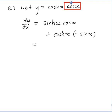So the answer is sinh x cos x - cosh x sin x. That's the end of the problem.